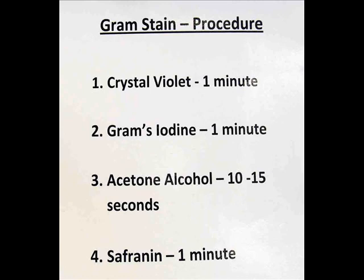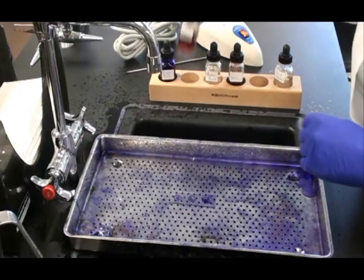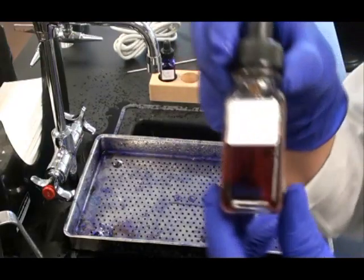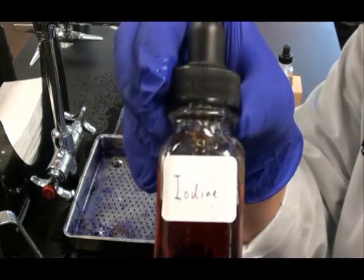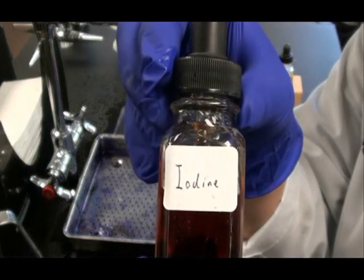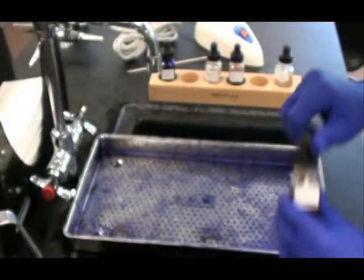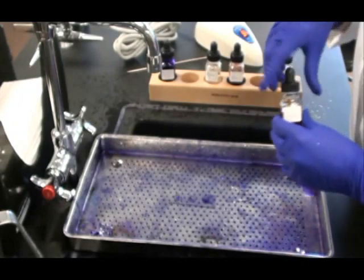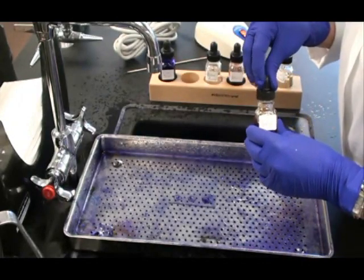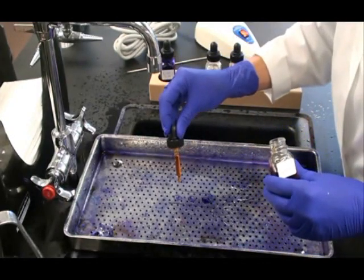My next step is to apply the mordant Grams iodine. I will leave that on for one minute. What the mordant does is it binds with the crystal violet to make a big molecule. This big molecule gets trapped in the many layers of peptidoglycan in the gram positive cell wall.